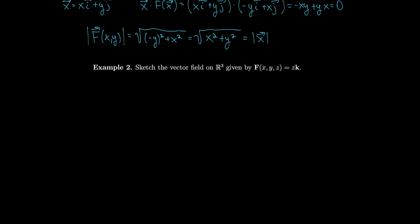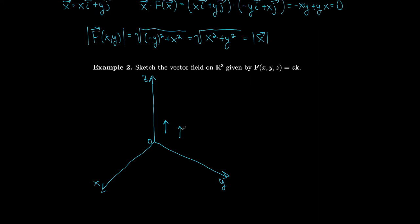Let's now try sketching the vector field on R3 given by F(x, y, z) = zk. Notice that in each case the vector field just points either up or down in the k direction, because the k component equals the z value and we have zero i and zero j — so it doesn't move left or right. For example, plugging in the point (1, 1, 1), we get z = 1, so the vector just goes up 1. Anywhere z = 1, regardless of x and y, we get the same vector pointing up 1.